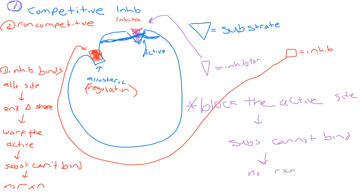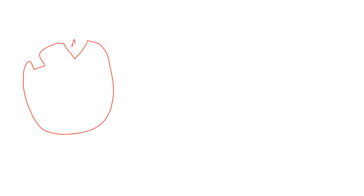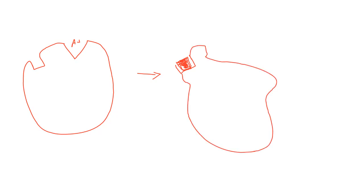Let me do a simple sketch to show this. Originally the enzyme looked like this with a triangular active site. Once the inhibitor is in the allosteric site, it kind of warps this whole protein. Maybe it's this dramatic, maybe it's not — but the point is the active site is no longer conducive for the substrate. It's no longer triangular, so the substrate cannot bind. Binding of this inhibitor warps the active site such that the substrate cannot bind.